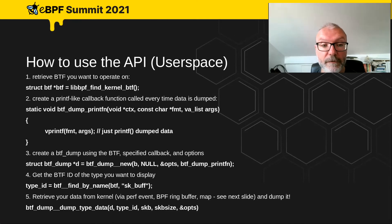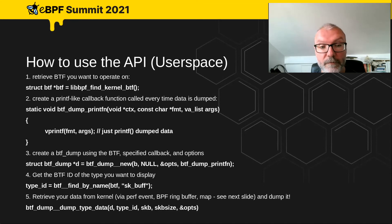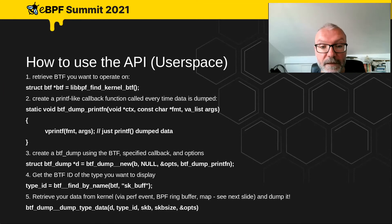Finally, when we have our data from the kernel, we call btf_dump__dump_type_data with the dump, the type ID we want to dump, the data itself, the size of that data, and any additional options around display.